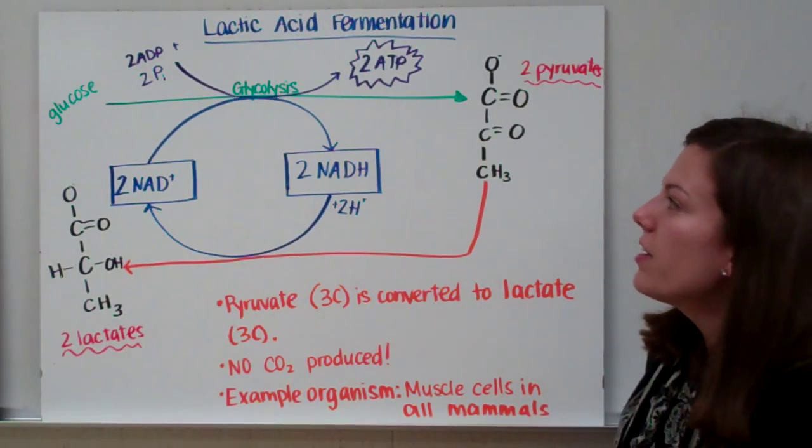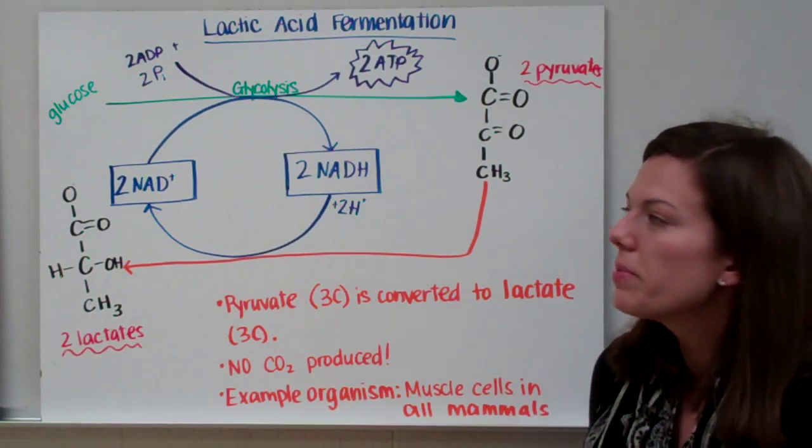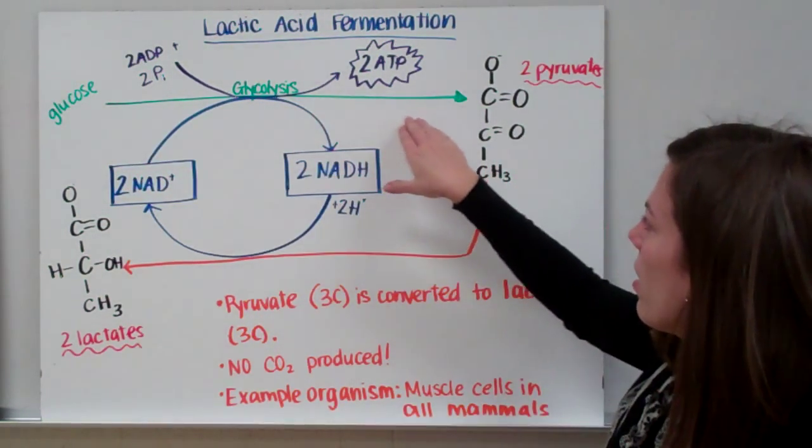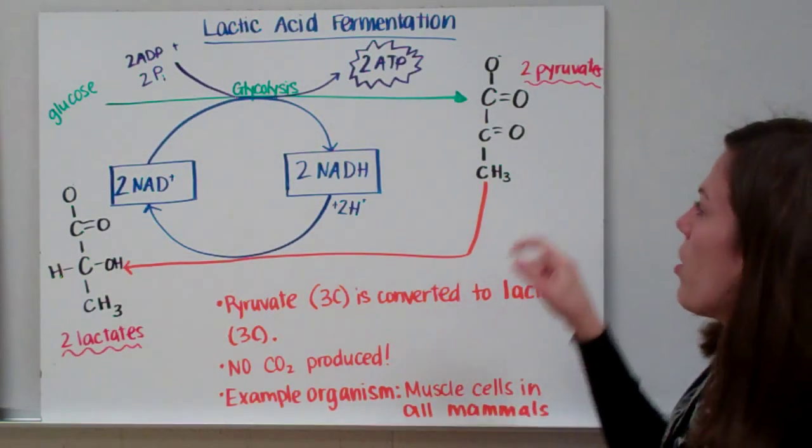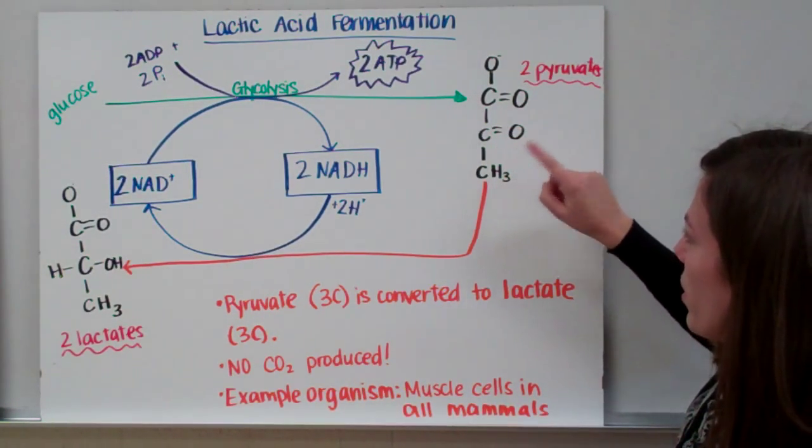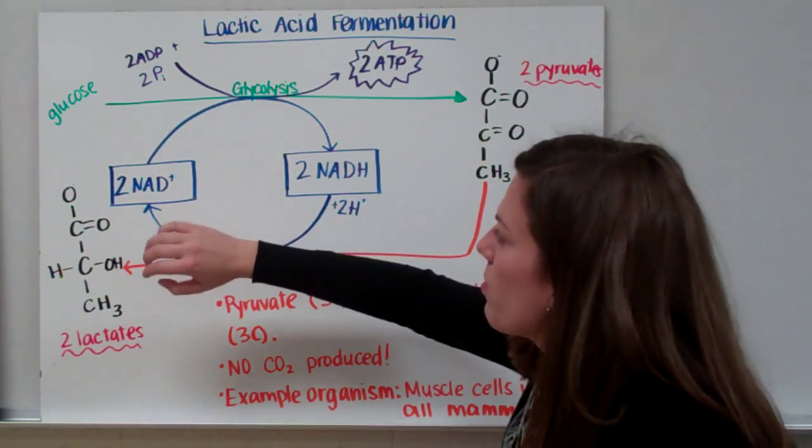Now, our next example is very similar. It's called lactic acid fermentation. Again, we're starting with glucose, going through glycolysis, and breaking our six-carbon glucose into two three-carbon pyruvates. See, one, two, three carbons. So this is our pyruvate right here.